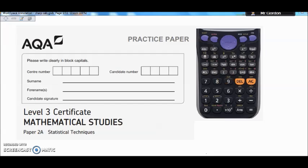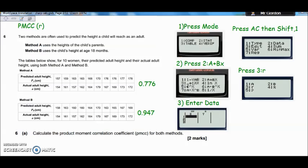This question is number 6 in the paper. It's talking about two methods often used to predict the height a child will reach as an adult. Method A uses the height of the child's parents, so we're predicting the child's height from the parent's height. Method B uses the child's height at age 18 months. The table below shows for 10 women their predicted adult height and their actual adult height using both method A and method B.